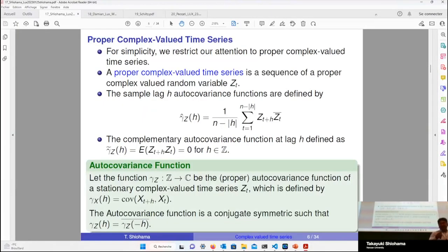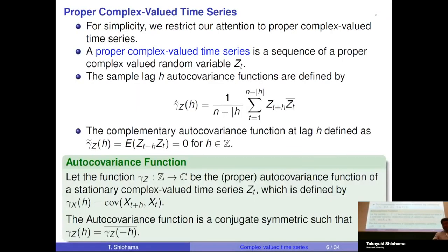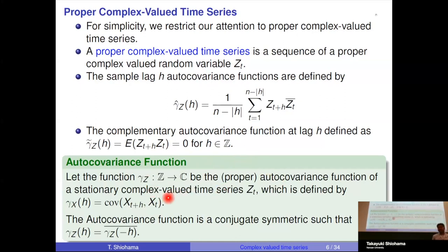For simplicity, we restrict our attention to proper complex-valued time series. A proper complex-valued time series is a sequence of proper complex random variables z_t. The sample lag-h autocovariance function is defined accordingly. We assume the complementary autocovariance function at lag h is zero because we assume the process z is a proper complex-valued time series. The autocovariance function is defined similarly to the real-valued case, but with the conjugate-symmetric property: the conjugate of the lag-h covariance equals the covariance at lag -h.